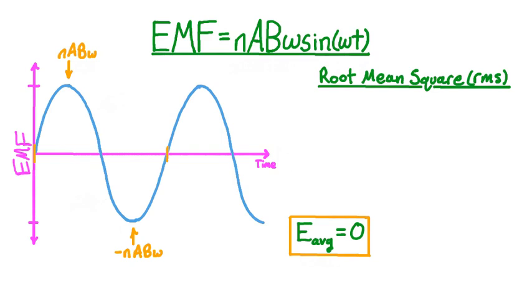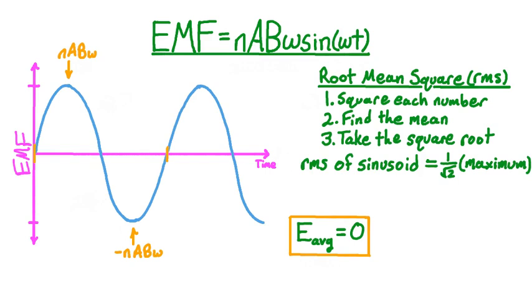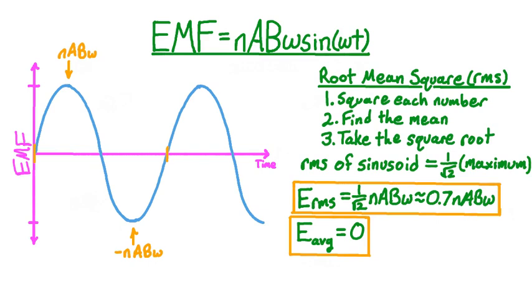So we want a different kind of average that includes information about the peak values. One value particularly useful for electronics applications is the root mean square, or RMS. Each word — root, mean, and square — refers to one step in the calculation. The first step is to square each number, making all values positive. Next, find the mean of these squared numbers. Finally, take the square root of that mean. It turns out that the RMS value of a sinusoid has a very nice form: it equals exactly 1 over the square root of 2 times the maximum value. So the RMS EMF from our generator is (1/√2) × N·A·B·omega, which is approximately 0.7 times N·A·B·omega.